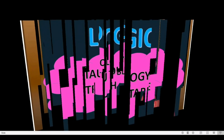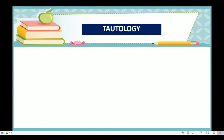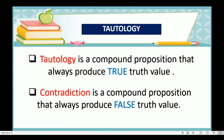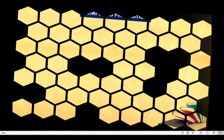First, what is tautology? When we say tautology, it is a compound proposition that always produces a true truth value. On the other hand, we have the contradiction — the opposite of tautology. It is a compound proposition that always produces a false truth value. In this lesson, we are focusing on compound propositions, and always remember that we have four compound propositions — or four connectives or operators in compound propositions.